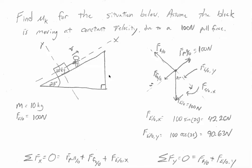The problem says find mu sub k for the situation below and assume the block is moving at a constant velocity due to a 100 newton pull force. So we got a little dude here pulling on a 10 kilogram block and he's pulling it up a ramp at an angle of 25 degrees.